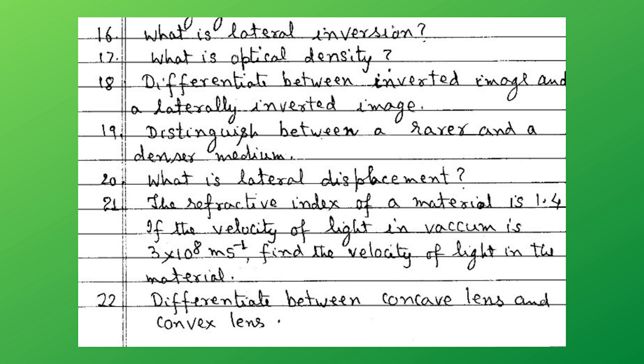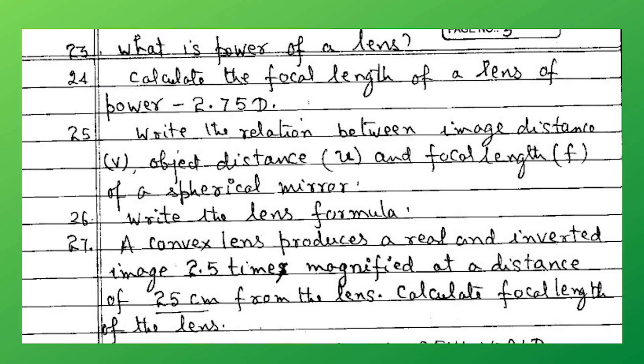What is lateral inversion? What is optical density? Differentiate between the inverted image and the laterally inverted image. Distinguish between the rarer and denser medium. What is lateral displacement? The refractive index of a material is 1.4; if the velocity of light in vacuum is 3 × 10⁸ m/s, find the velocity of light in the material. Differentiate between the concave and convex lens. What is the power of a lens?